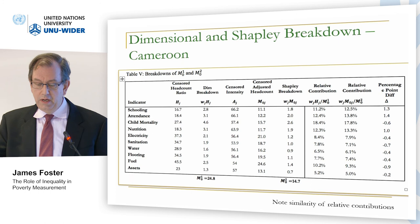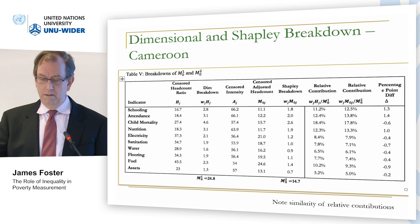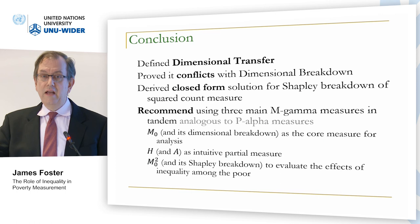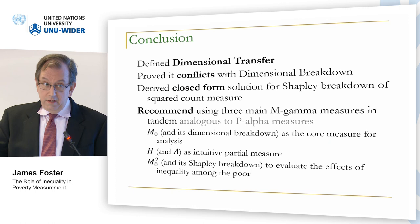In conclusion: we've defined dimensional transfer, showed how it conflicts with the basic axiom of dimensional breakdown, derived the closed form solution for the Shapley breakdown of the squared count measure, and recommend using this M-gamma class of measures in tandem — just as P-alpha has been used over time and space. Thank you very much.